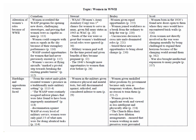Let's assume our topic is women in World War II. Suppose in all the reading we've done, the two main ideas that seem to come up are alteration of women's roles because of World War II, and hardships and oppositions women faced. Across the horizontal axis of the matrix, we have placed the authors' names from our sources. In the boxes are paraphrases and quotations that have to do with the main idea from the vertical axis.